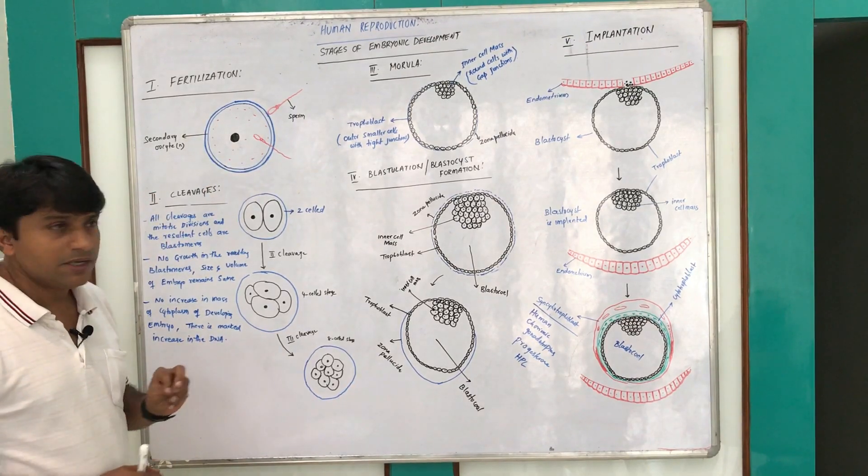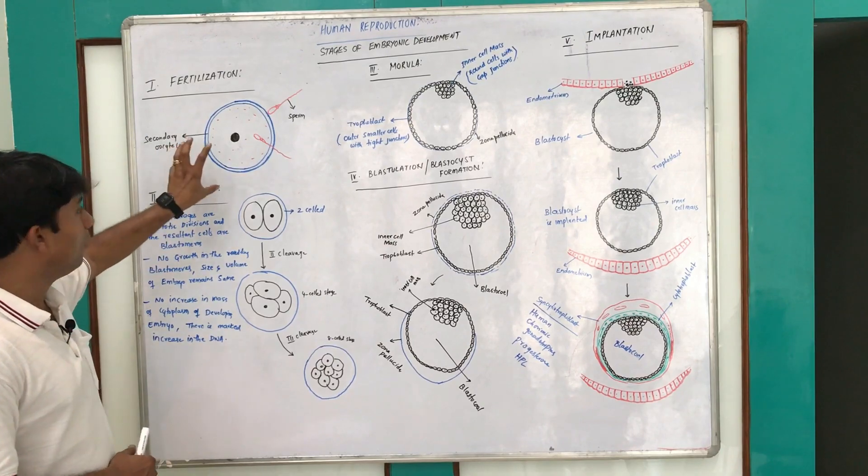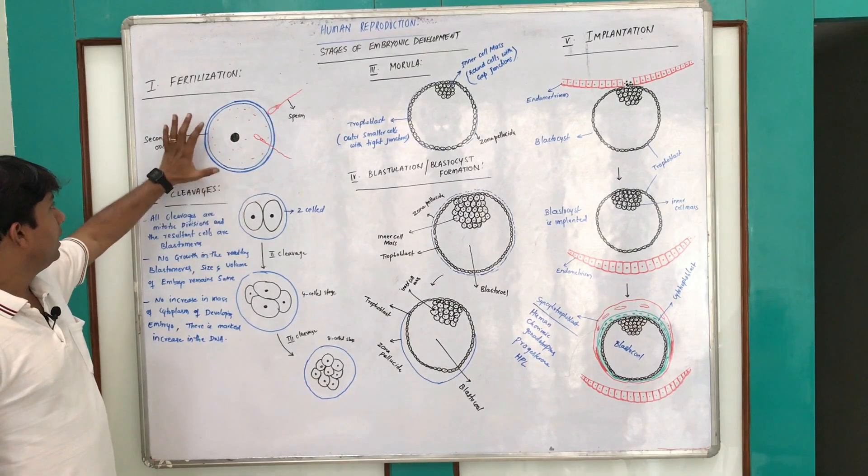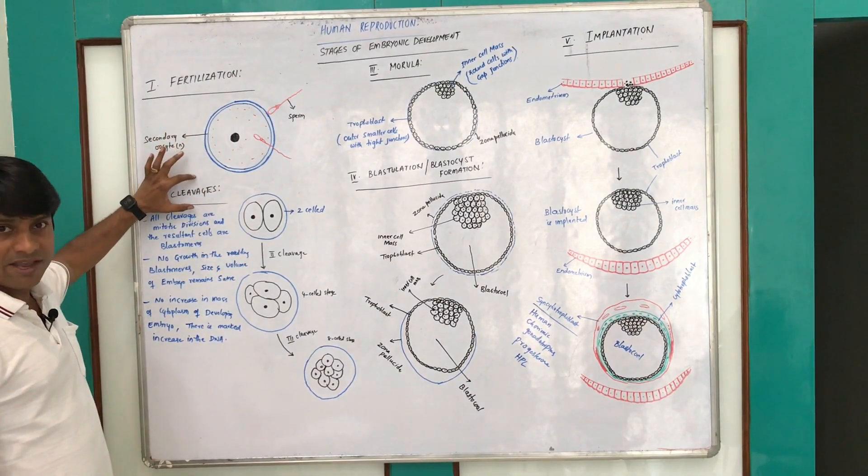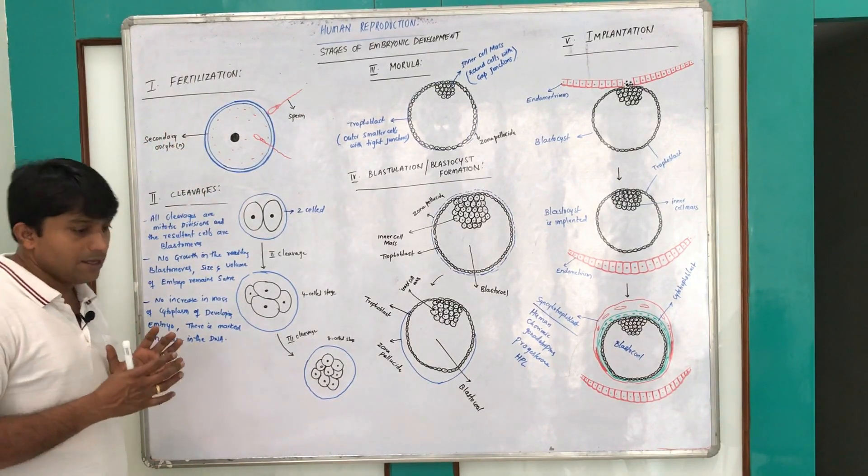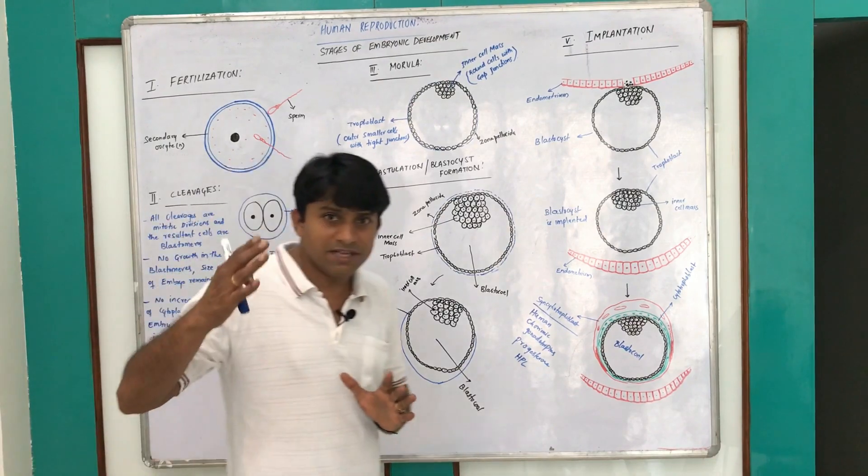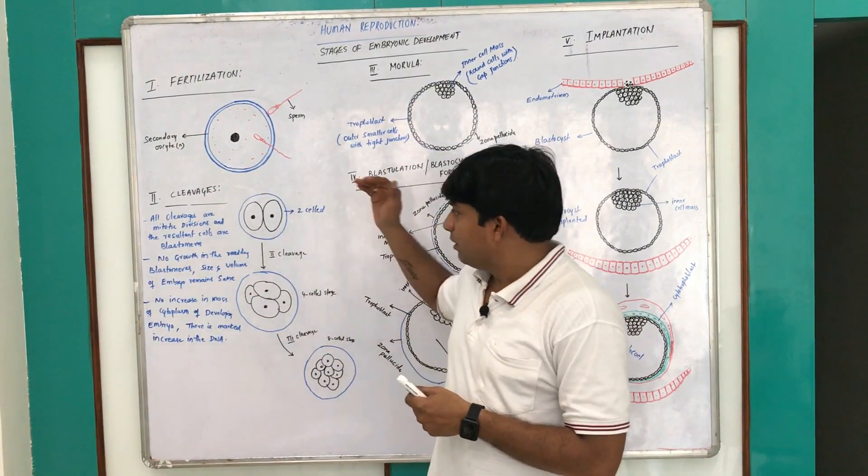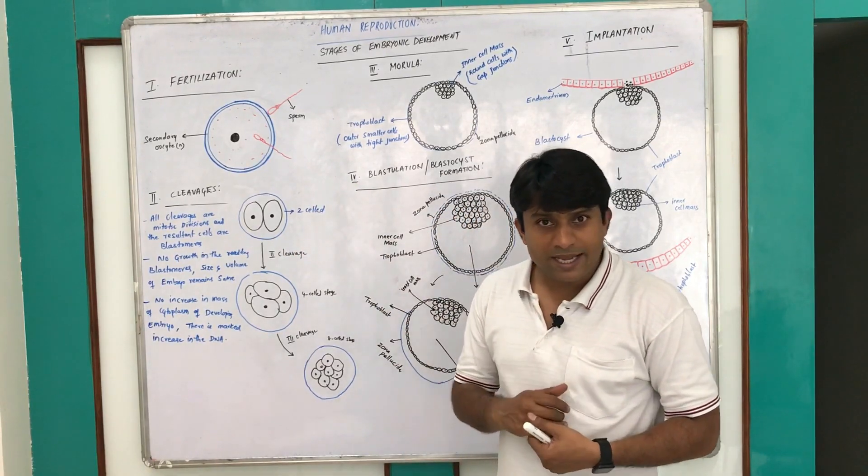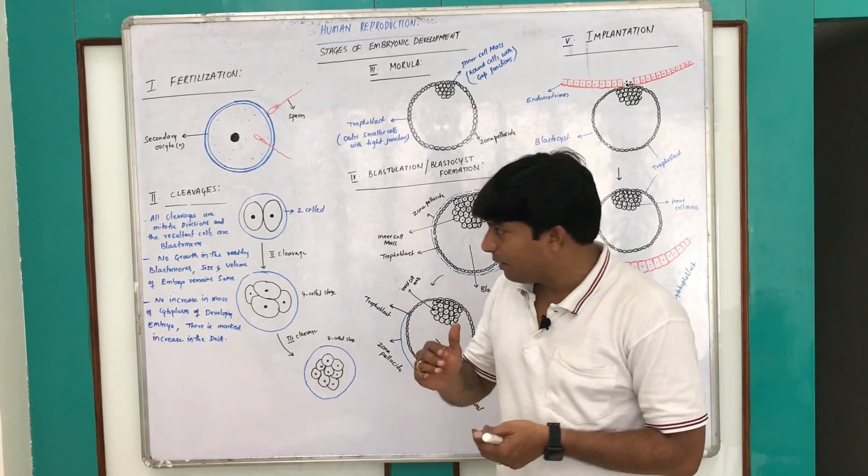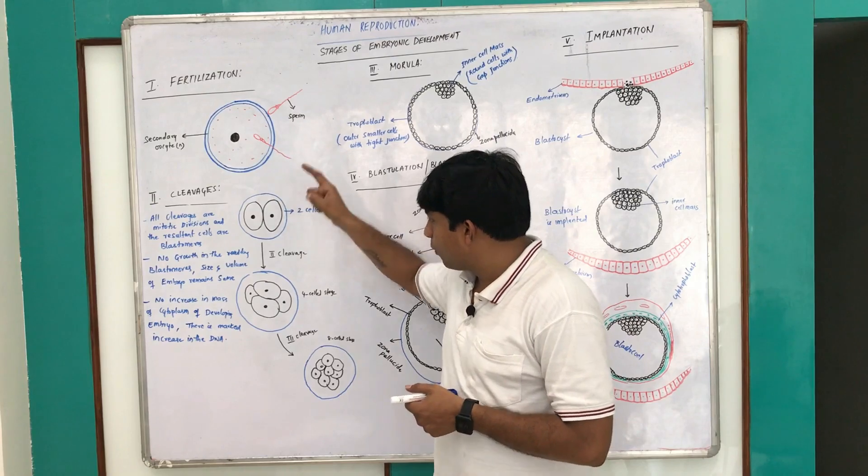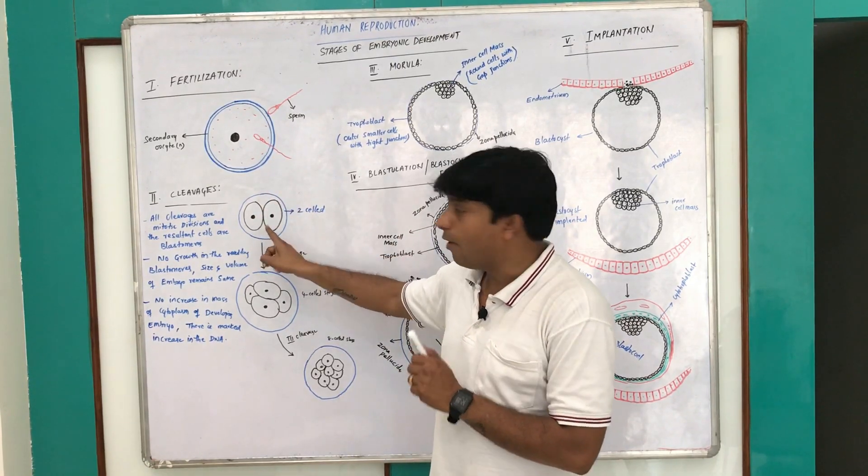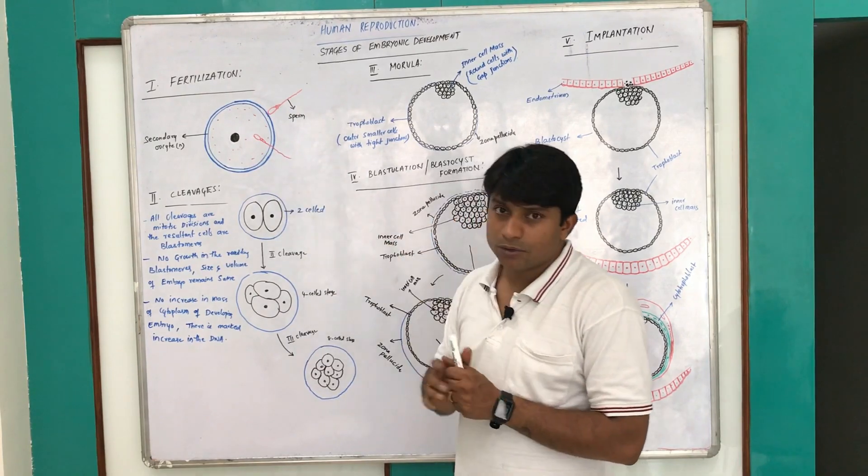After fertilization it is followed by cleavages. Cleavages are the vertical furrows which divide the zygote into a number of cells. The first cleavage furrow is called meridional because the first cleavage furrow proceeds from animal to vegetal axis or from the center of the zygote.